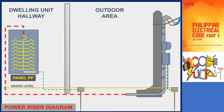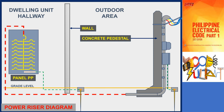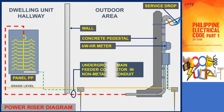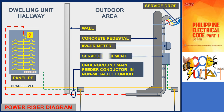For our project, the service entrance will be mounted in a concrete pedestal, and the main feeder conductors shall be installed underground in non-metallic conduit. The figure shown is the power riser diagram for the project. A concrete pedestal is used to mount the service entrance and other accessories required by the local electrical utilities such as kWh meter, service head, etc. In this video, we will determine the size of the main feeder conductors, main overcurrent protective device of the dwelling unit panel, and the service and service equipment rating.